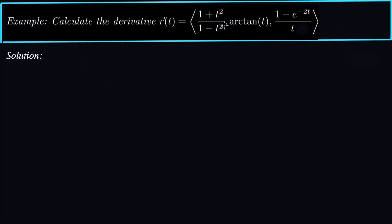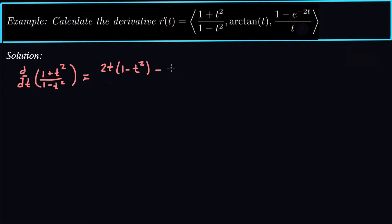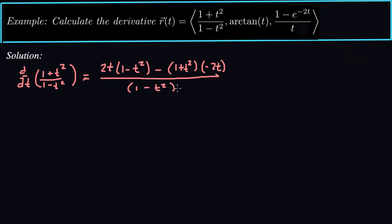The first thing we're going to do is calculate the derivative of this first function using the quotient rule. That means derivative of the top, which is 2t, times the bottom, which is (1 - t²), minus the top, which is (1 + t²), times the derivative of the bottom, which is -2t, all over the bottom squared — that is (1 - t²) squared. That's the quotient rule: derivative of the top times the bottom, minus the top times derivative of the bottom, over the bottom squared.